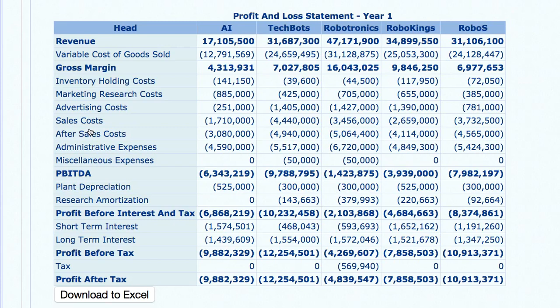There is a good correlation between gross margin and the profits that companies are making. The more margins a company has, the more profits they are able to make. Coming down to inventory holding cost — which company did not have excess inventory and was able to manage their inventory quite well?